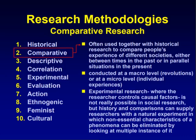In comparative research methodology, often used together with historical research, it compares people's experience of different societies, either between times in the past or in parallel situations in the present. Conducted at a macro-level — such as revolutions — or at a micro-level of individual experiences. Experimental research where the researcher controls causal factors is not really possible in social research, but history and comparisons can supply researchers with a natural experiment in which non-essential characteristics of a phenomenon can be eliminated by looking at multiple instances of it.